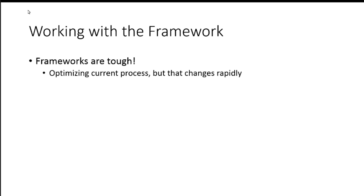When you build a framework, you're looking at what developers are currently doing — their current process — and you look at that and say, we can optimize this, we can create something, and you can do this in two steps or something like that. Well, you can already see the problem. By the time we go build that and get it back to them, the process has probably changed. That's one of the biggest challenges, unless you can really iterate fast.